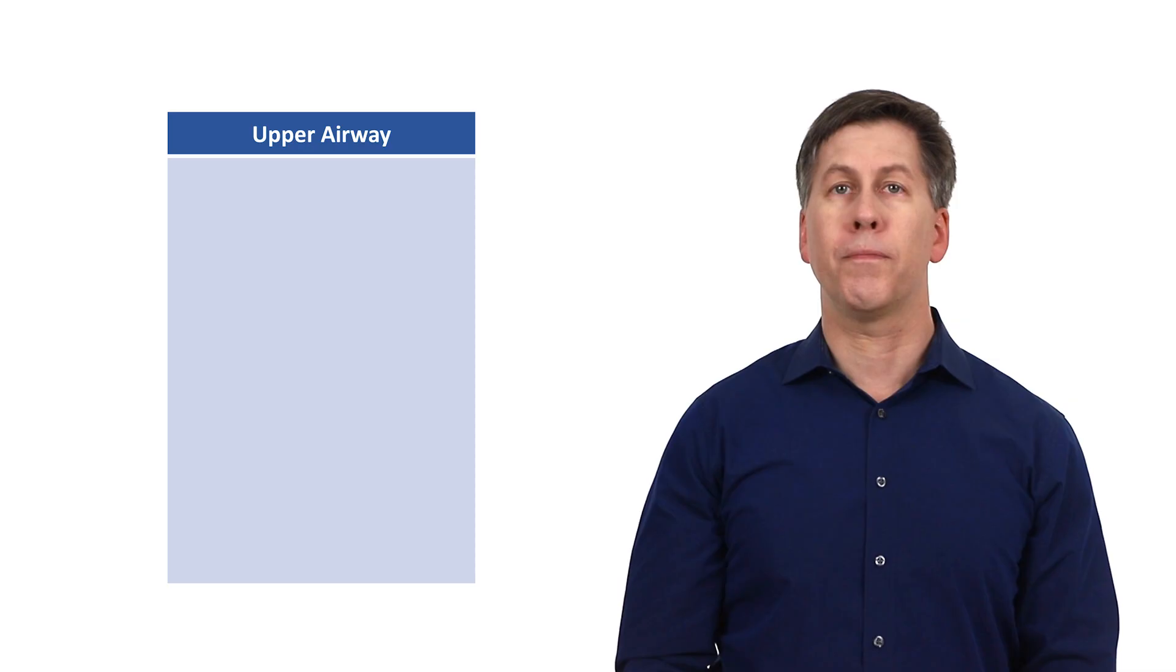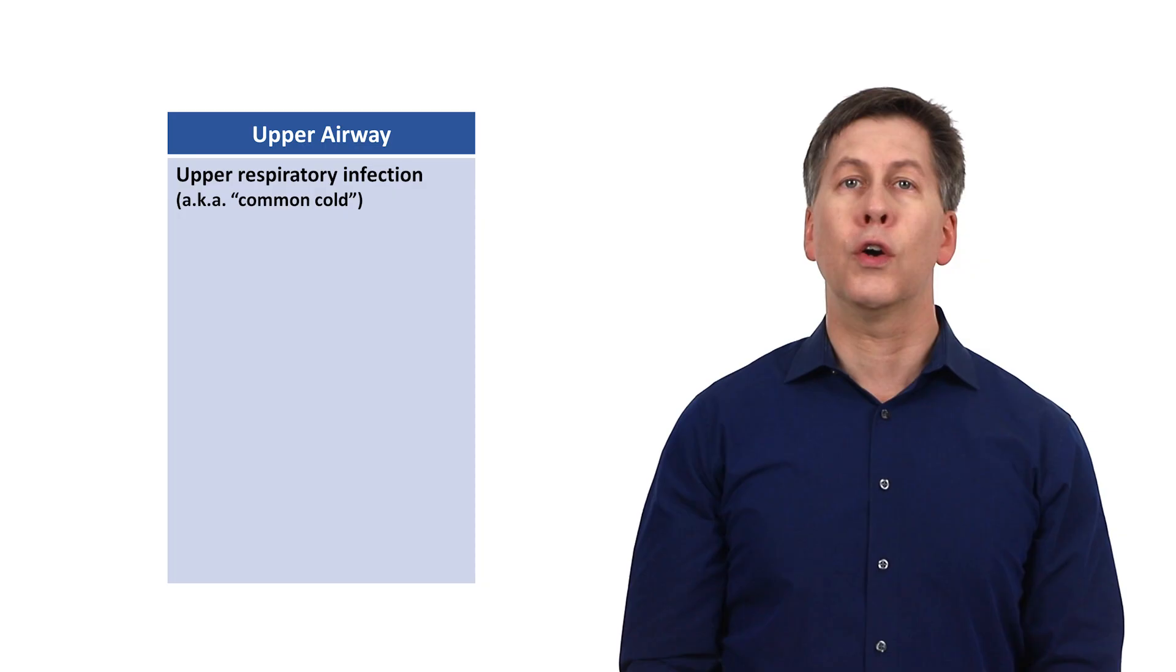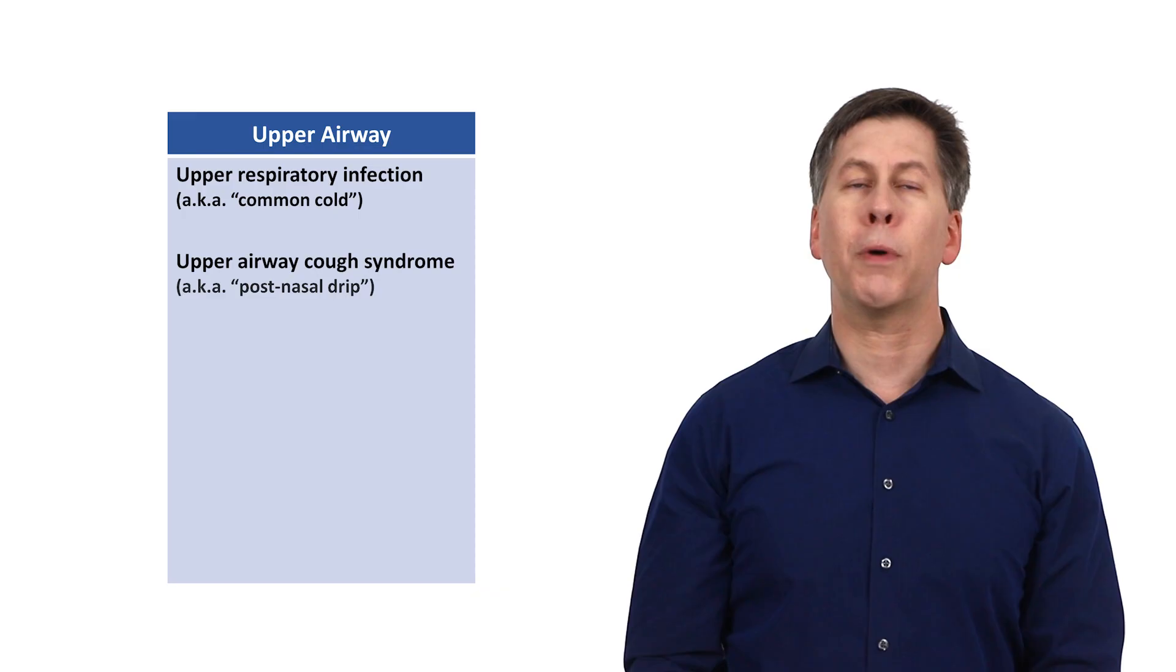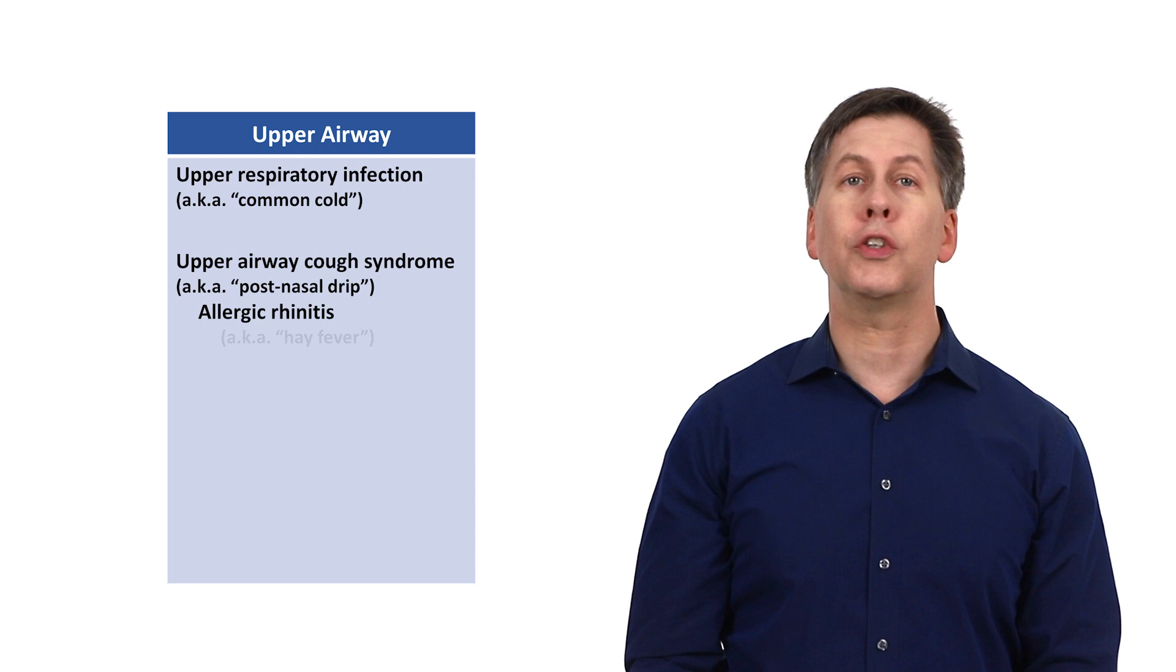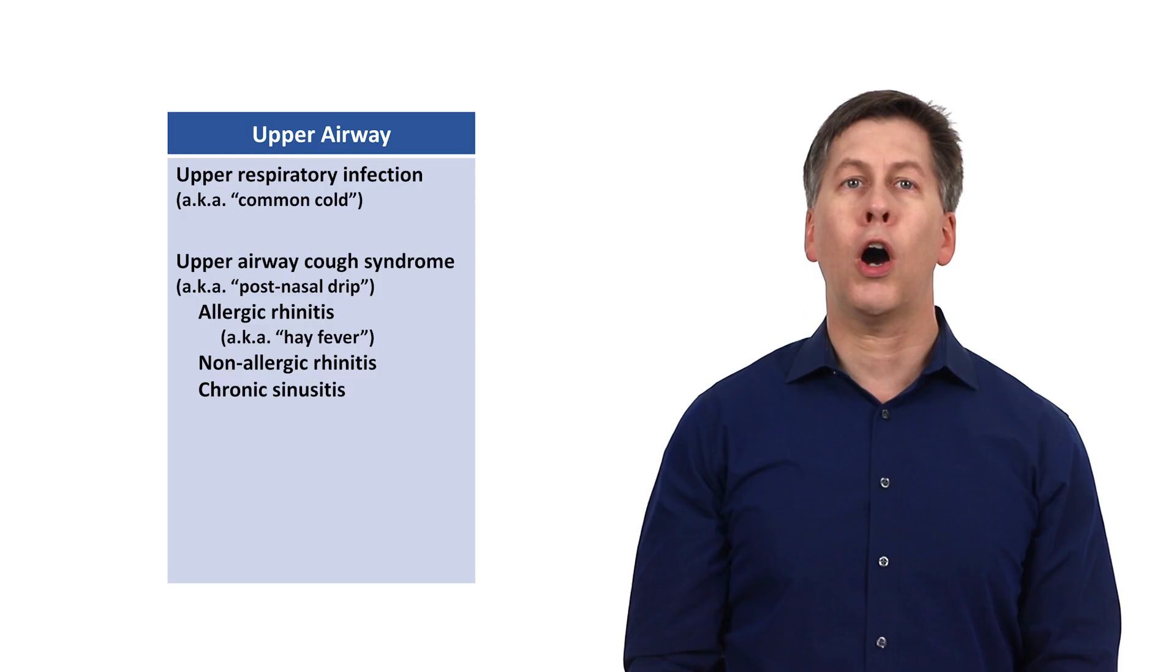There are four major etiologies of cough in the upper airway. First is an acute upper respiratory infection, also known colloquially as a common cold, which is caused by viruses. There is also another entity, formerly called upper airway cough syndrome, but more commonly referred to as post-nasal drip. This is an umbrella term that includes a variety of chronic conditions with overlapping presentations and treatments, including both allergic rhinitis, also known as hay fever, and non-allergic rhinitis. Chronic sinusitis also falls into this category.